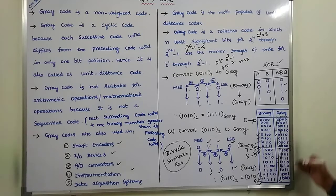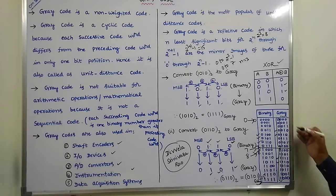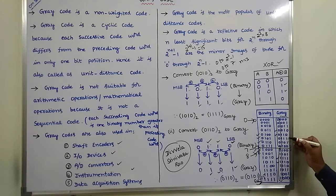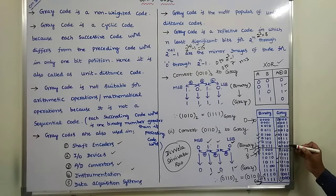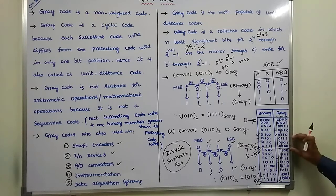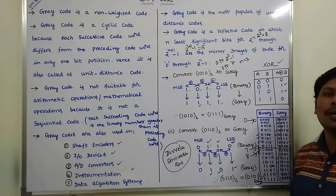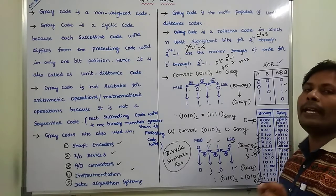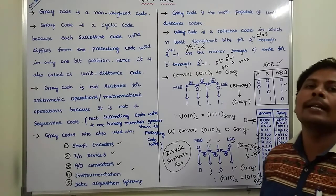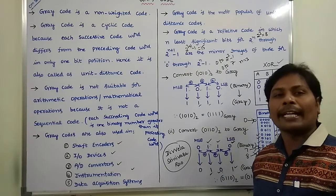Continuing the mirror image verification without considering the MSB bit positions: grey code entries for 0 (000), 1 (001), 2 (011), 3 (010), 4 (110), 5 (111), 6 (101), 7 (100) are mirrored by entries 8 through 15 respectively. This property is satisfied in grey code, hence we can say that grey code is a reflective code.